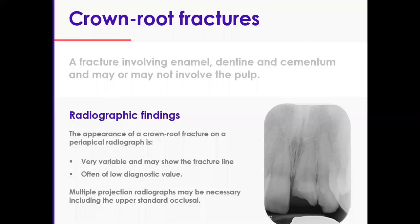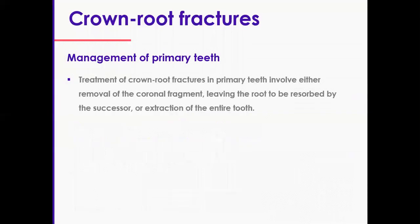You need to get into a habit of having the same systematic examination on every single patient who walks through the door with a traumatic dental injury, no matter what that injury is. So your approach should be a systematic one — and if you get into that habit, treating trauma becomes second nature. The management in primary teeth involves either removal of the coronal wobbly fragment, leaving the rest of it to resorb away, or extraction of the entire tooth.